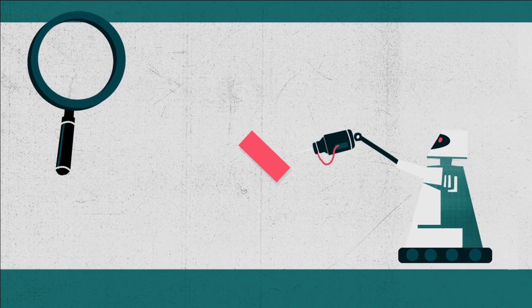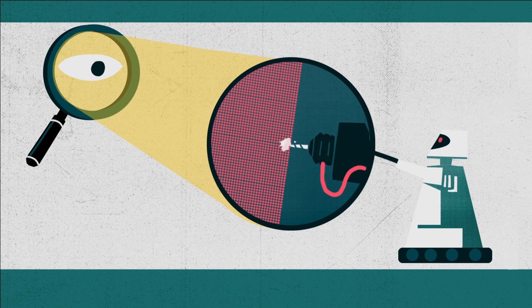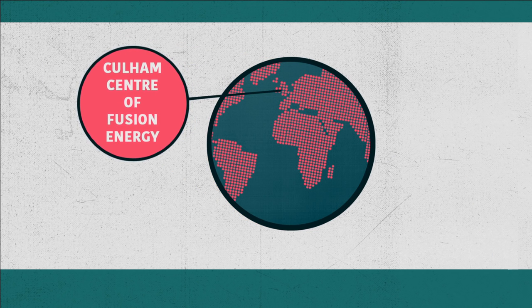Then a tiny piece, 500 times thinner than a strand of your hair, was cut out using specialist equipment at the Culham Centre for Fusion Energy, home of the largest fusion reactor in the world.